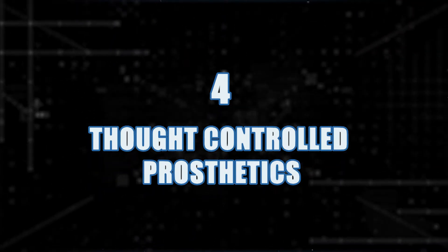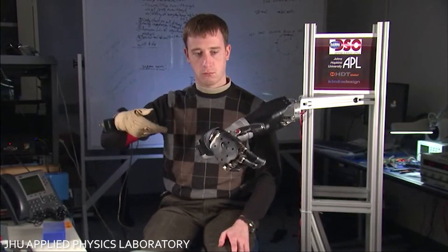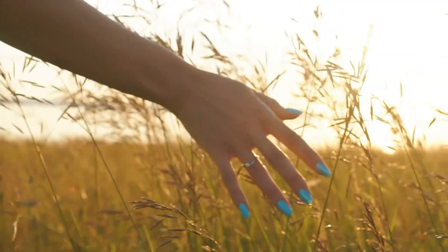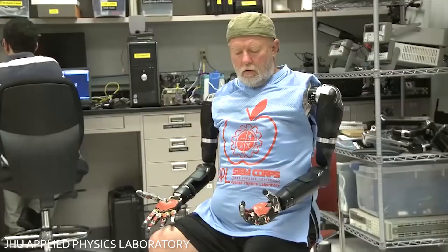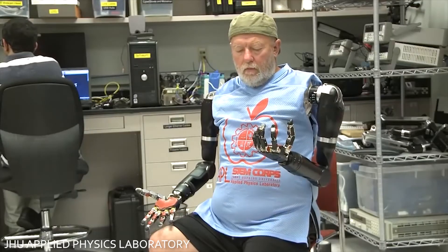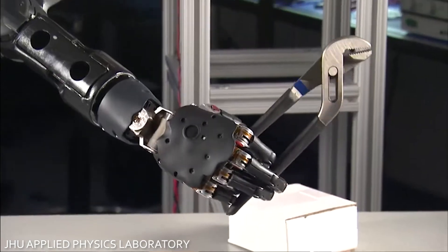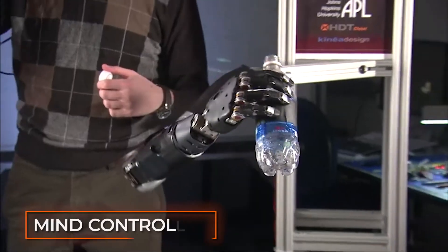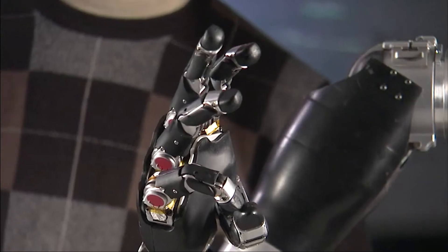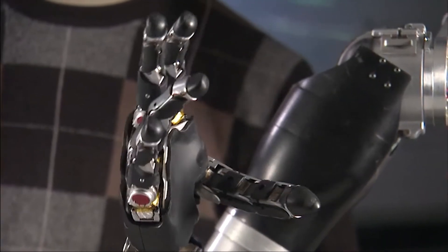Number 4. Thought-controlled prosthetics. A robotic arm doesn't quite provide the flexibility and dexterity that a real arm does, obviously. Well, the aim of modular prosthetic limb is to have the same functionality as a normal arm, all being controlled using the mind. It's a bionic arm with human-level dexterity, weight, range of motion, and force generation.